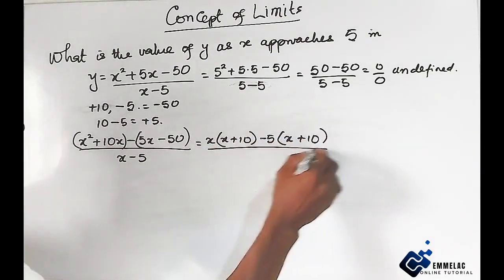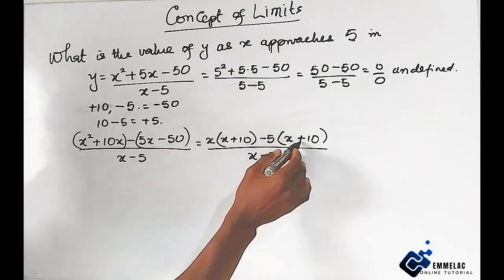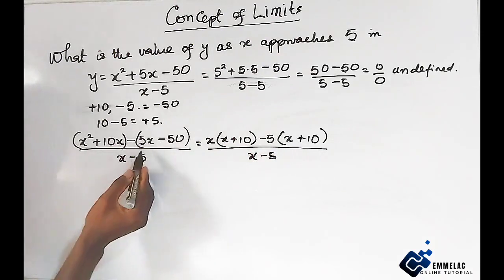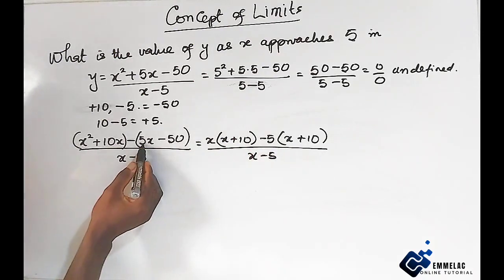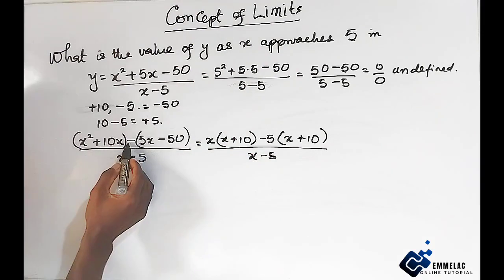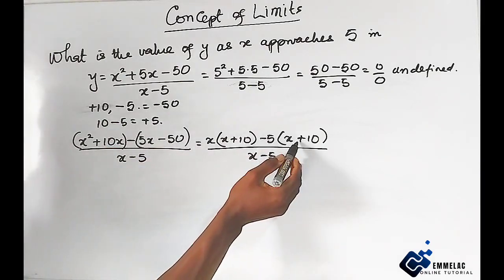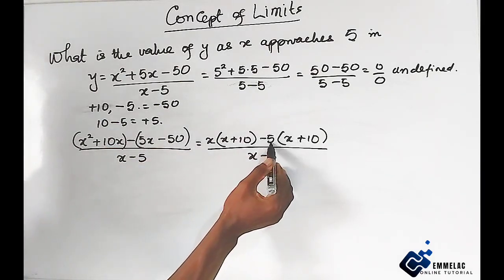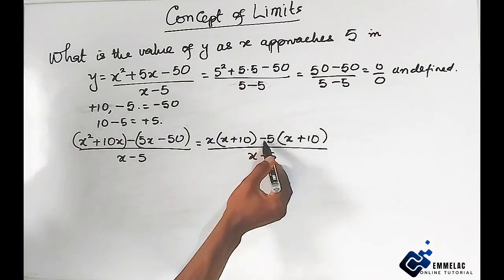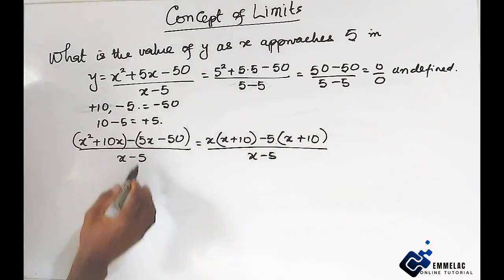Some of you might be asking why this is positive. This is because when you factor out negative 5, you have negative 5 times x plus 10. This negative feeds this negative, which gives us positive. And when you open this bracket you get the same value.